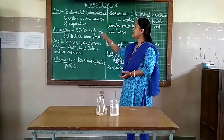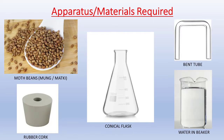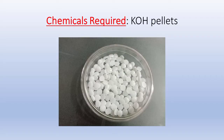For doing this practical, the apparatus and materials you will need are: 25 to 30 seeds of moth beans (also known as vatki or moth beans), water, cotton, a conical flask, a bent tube, a rubber cork, and potassium hydroxide pellets.